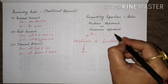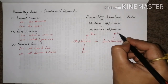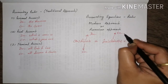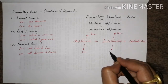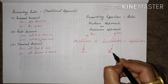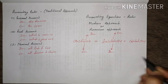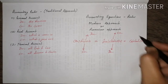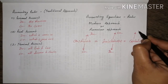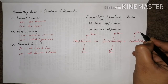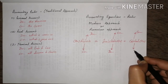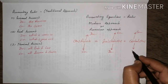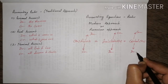If the value of a liability is increasing, the liability account is credited. If the liability value is decreasing, the liability account is debited. If capital value is increasing, capital is credited; if capital value is decreasing, it is debited.